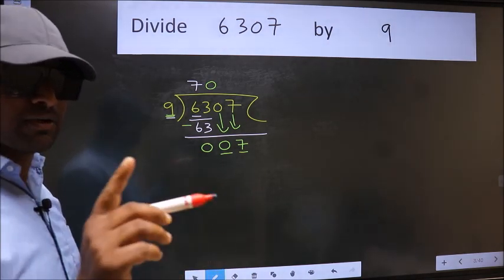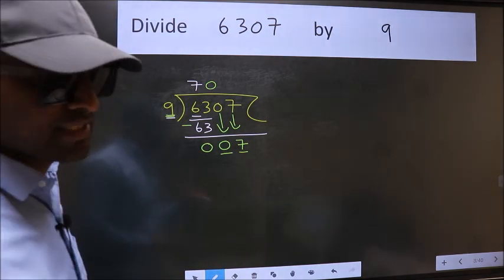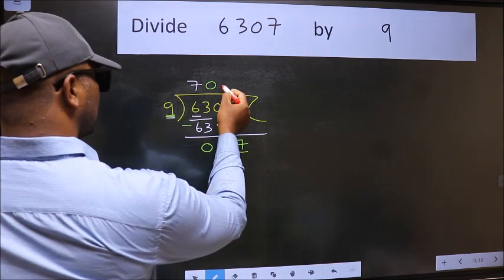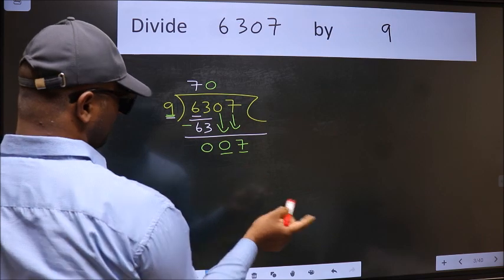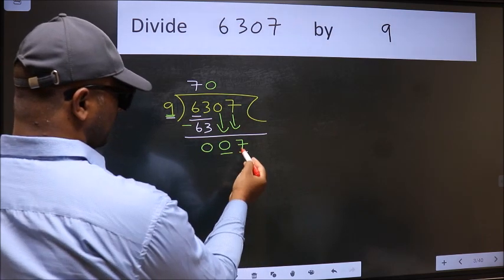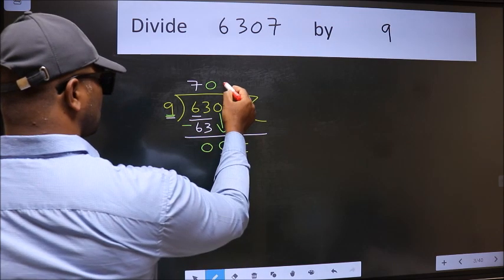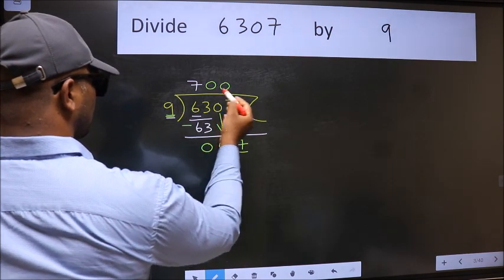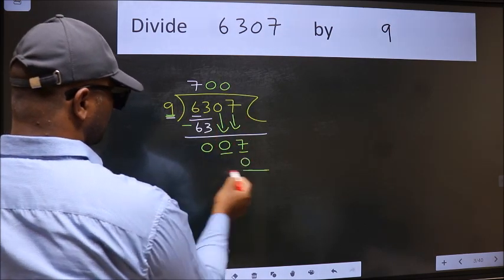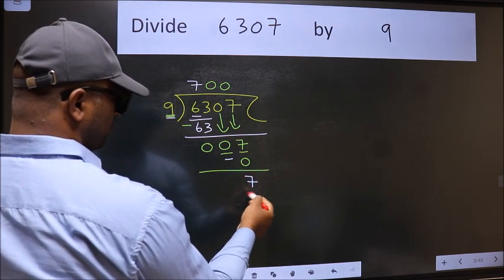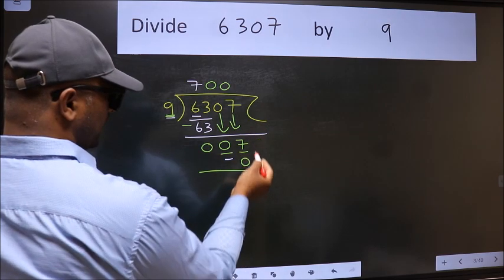Instead of that, what you should think of doing is which number should we take here? If I take 1, we will get 9, but 9 is larger than 7. So what we should do is we should take 0. So 9 into 0 is 0. Now we should subtract. We get 7 and you continue the division. Over here we did not bring any number.